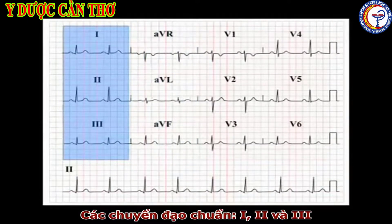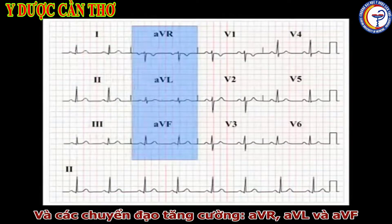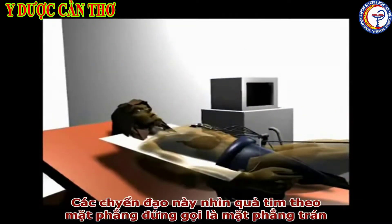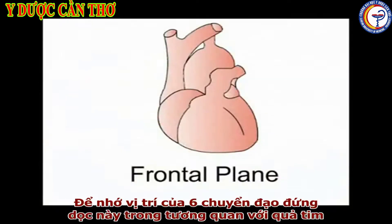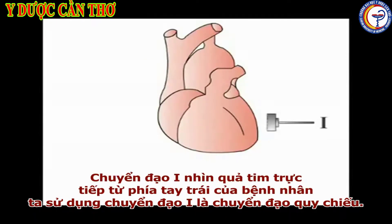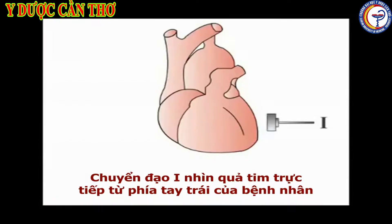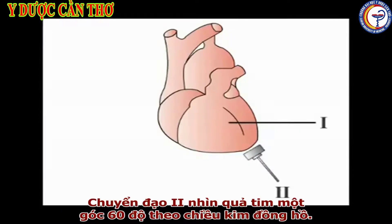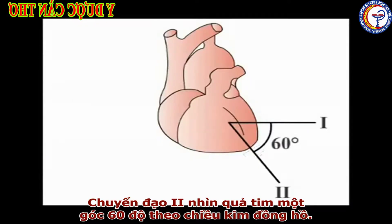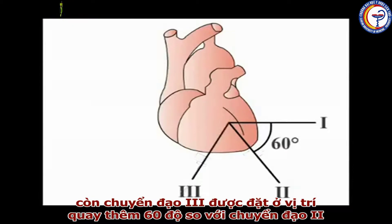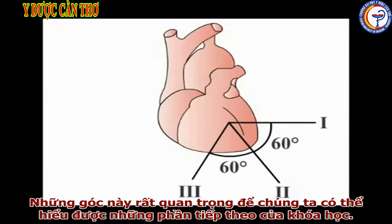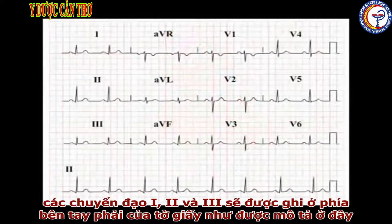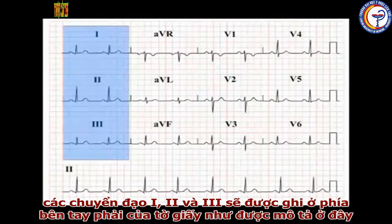The remaining six ECG leads can be considered in two groups: the standard leads — leads 1, 2, and 3 — and the augmented leads — AVR, AVL, and AVF. This vertical plane is known in anatomical terms as the frontal plane. To remember the position of all six vertical leads relative to the heart, use lead 1 as your reference point. Lead 1 looks directly at the heart from the patient's left-hand side and defines 0 degrees. Lead 2 looks at the heart at an angle 60 degrees further clockwise, while lead 3 is a further 60 degrees clockwise from lead 2. The readout from leads 1, 2, and 3 are recorded down the right-hand side of the ECG paper.